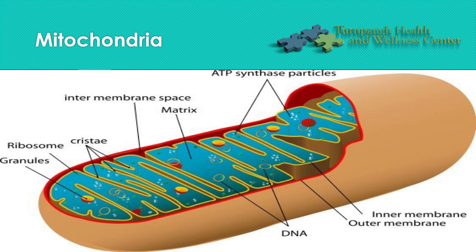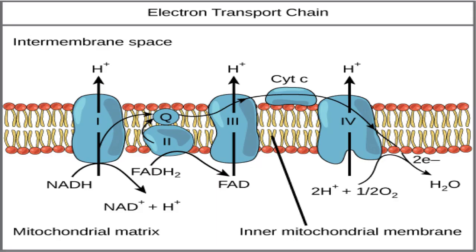Mitochondria does a lot of things, which we're going to talk about in a second. But if we were to take a deeper look into these cristae, we would now see what is the electron transport chain. This is in every mitochondria, and really important to know here, mitochondria are in every cell of the body except for red blood cells. So mitochondria is very crucial and very important to our cells and to our physiology. You can see this is something called the electron transport chain.